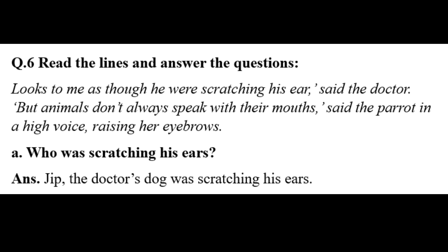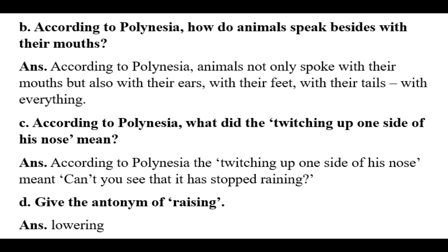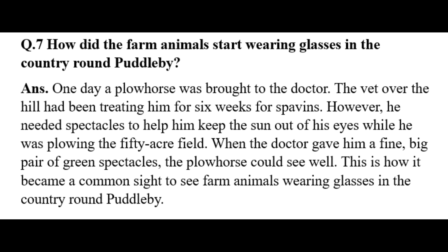Question six: Read the lines and answer. (a) Who was scratching his ears? Jip the doctor's dog was scratching his ears. (b) According to Polynesia, how do animals speak besides with their mouth? Animals not only spoke with their mouths but also with their ears, their feet, their tails, with everything. (c) What did the twitching up of one side of his nose mean? It meant 'can't you see that it has stopped raining.' (d) Give the antonym of 'rising': lowering.